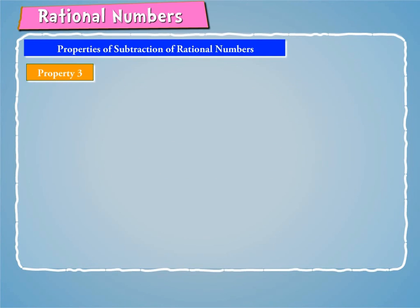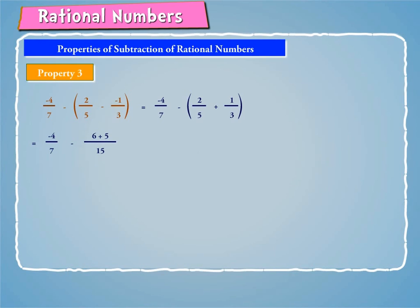Property 3: Let us consider the following. (−4/7) minus [(2/5) minus (−1/3)] equals (−4/7) minus [(2/5) plus (1/3)], which equals (−4/7) minus [(−6 plus 5) by 15], giving (−4/7) minus (−11/15), which equals (−60 minus 77) by 105, which equals −137/105.